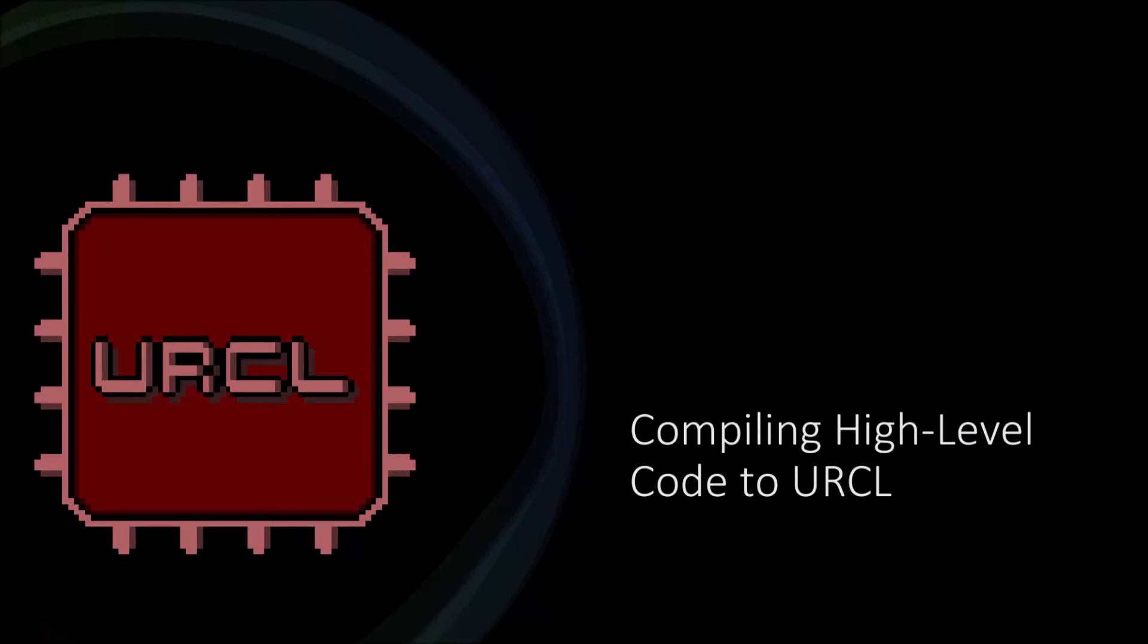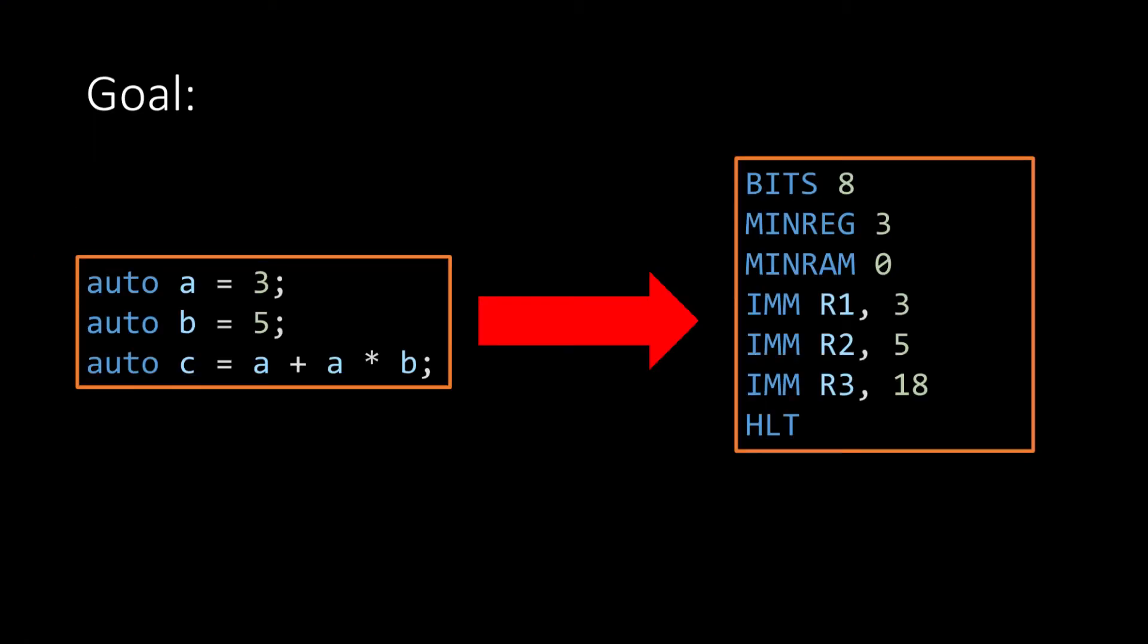Hello and welcome to a video on compiling high-level code to URCL, specifically B code to URCL. The goal is to take B code such as what we have on the left and turn that into URCL code like what we have on the right.